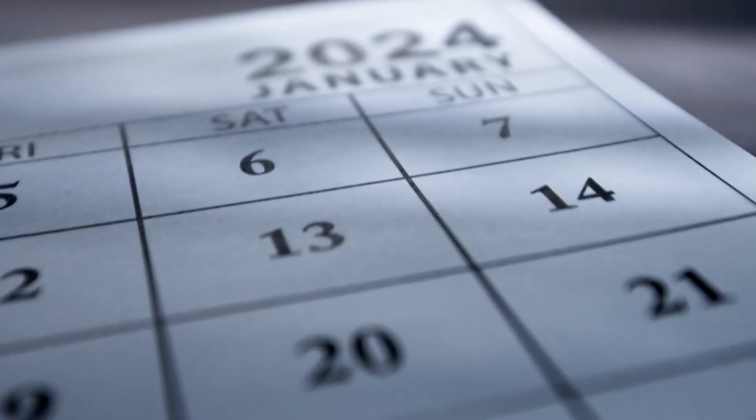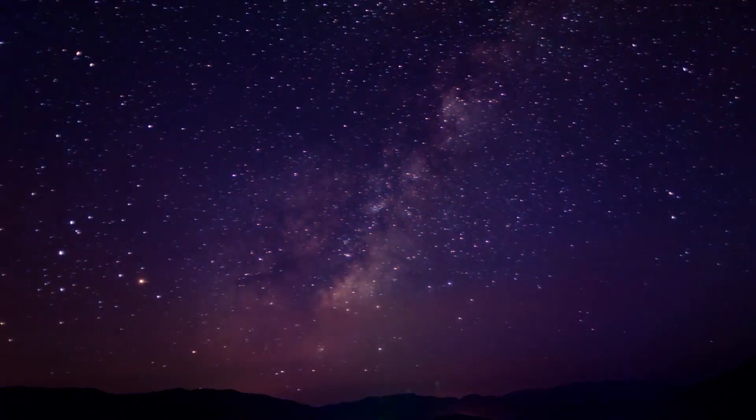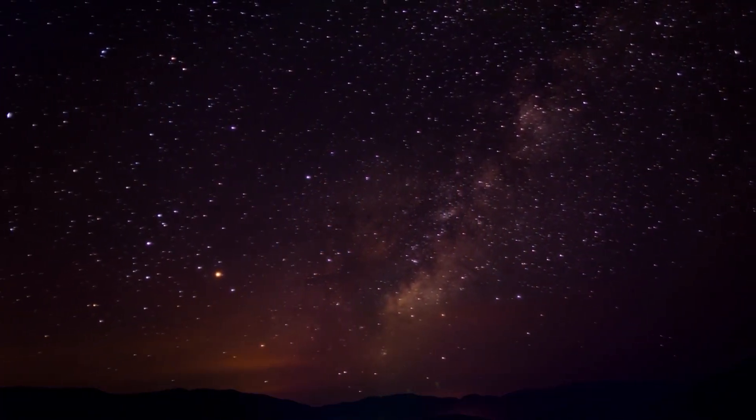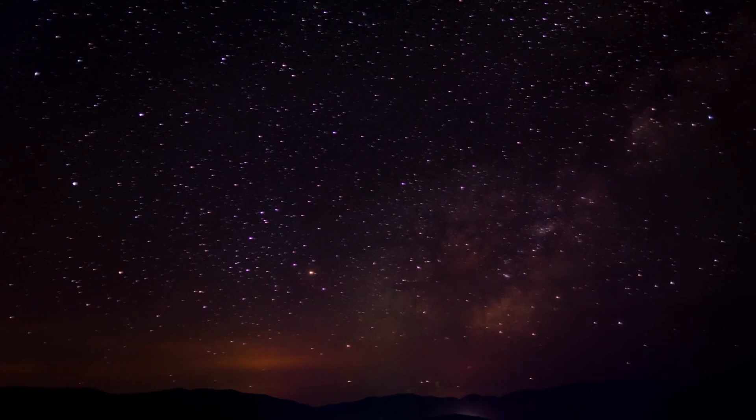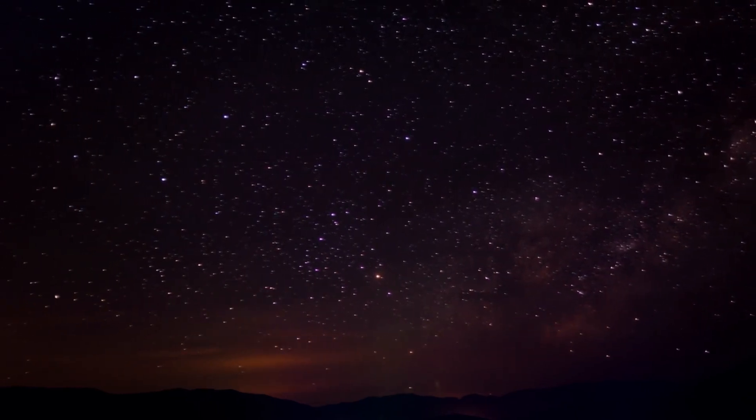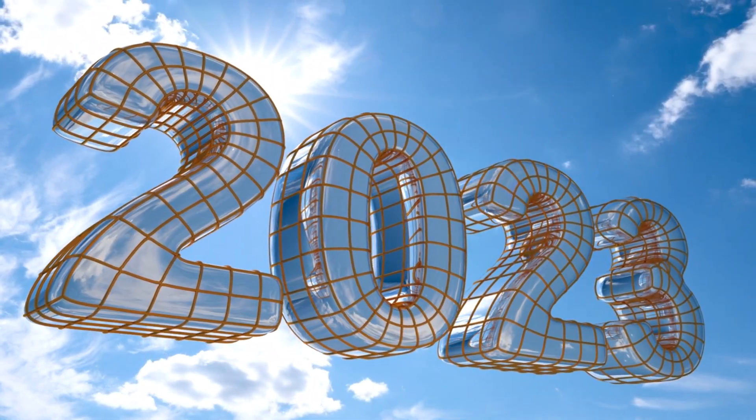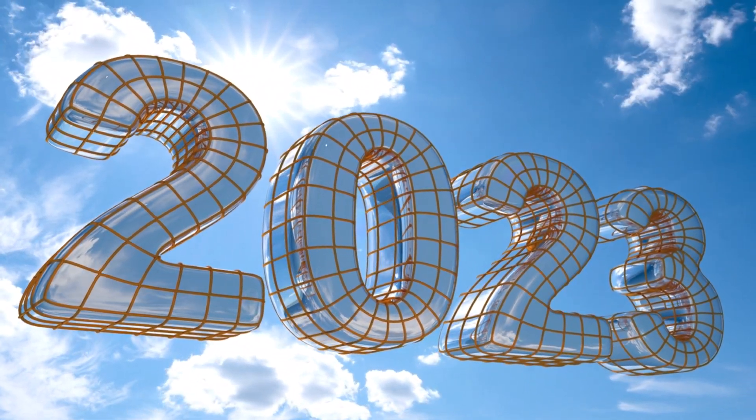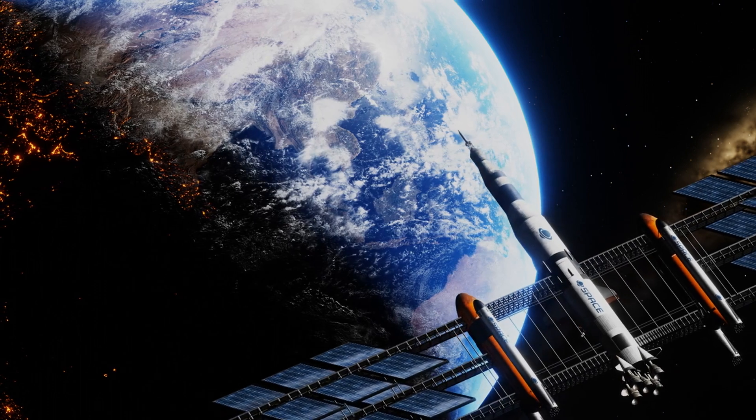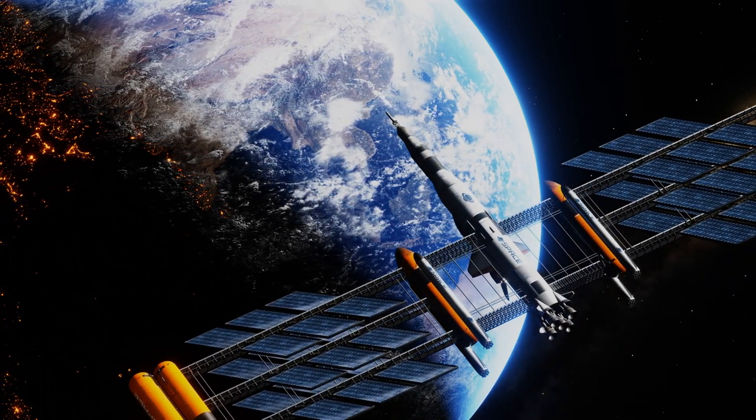Fast forward to April 13th, 2029, the much-anticipated day of Apophis' close encounter with Earth. As the asteroid hurtles through space at over 67,000 miles per hour (about 107,826 kilometers per hour), astronomers and space enthusiasts around the world hold their breath in anticipation. Apophis' trajectory brings it within a hair's breadth of our planet, passing a mere 19,000 miles (about 31,000 kilometers) above Earth's surface. To put that into perspective, that's closer than the distance between Earth and some of our weather satellites in geostationary orbit.